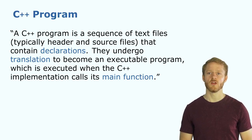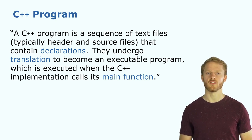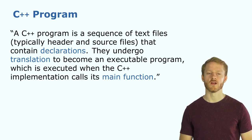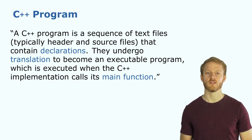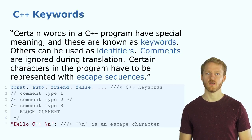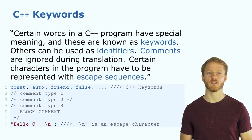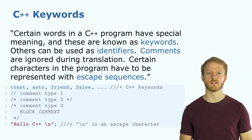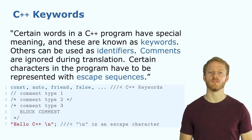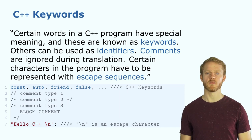What's a C++ program? It's basically a sequence of text files — the .hpp and .cpp files, source and header files — that contain declarations. Once we compile our program, these declarations will be executed when the implementation calls the main function. What are keywords in C++? They are words with a special meaning that we cannot use as identifiers because they are reserved for the language itself, like const, auto, friend, false, and others.